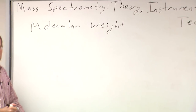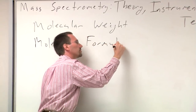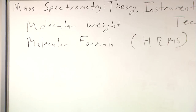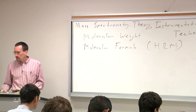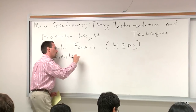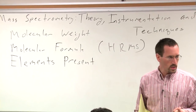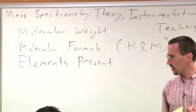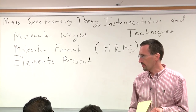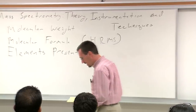We'll talk about high-resolution mass spectrometry, from which you can get molecular formula. One thing mass spec can easily tell you about is elements present, and this is really important because you can easily see bromine and chlorine. You can see sulfur and silicon if you know what you're looking for. NMR is not going to be a technique that tells you about elements like that, nor is IR. This is why you should be reading these spectrometric techniques.